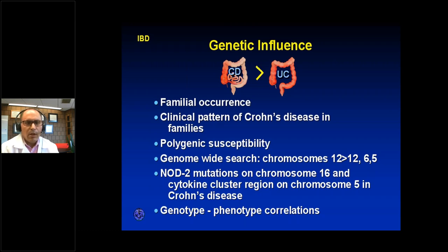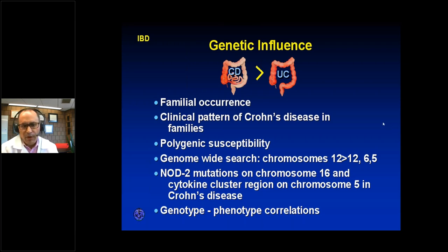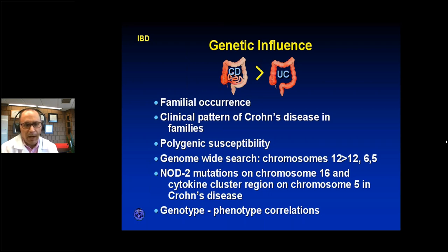Genetics are more important in Crohn's than in ulcerative colitis. If you have a first-degree relative with the disease, you tend to inherit the same type. There is also genetic anticipation — if your mom had the disease at age 40, you might develop it at age 30, and your child at age 20, reflecting earlier onset across generations. There's no single causative gene; many genes have been identified. If you have Crohn's or colitis, the odds of your child getting it — if you are the only parent with the disease — is 5% or less.